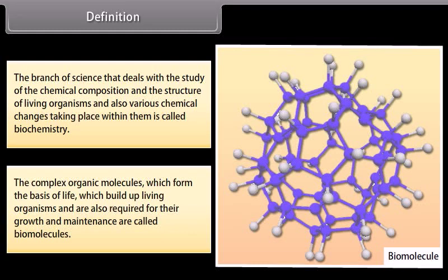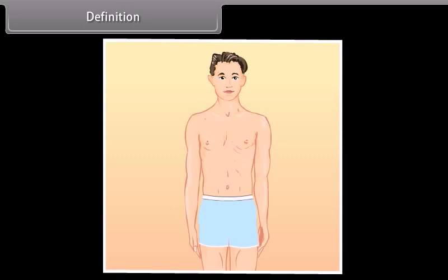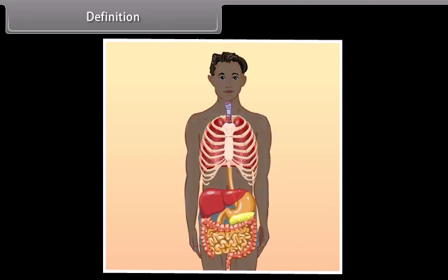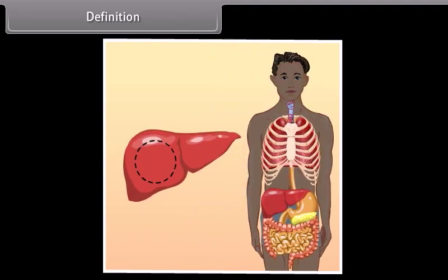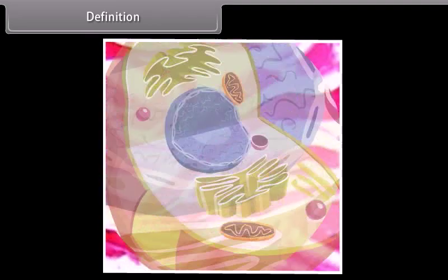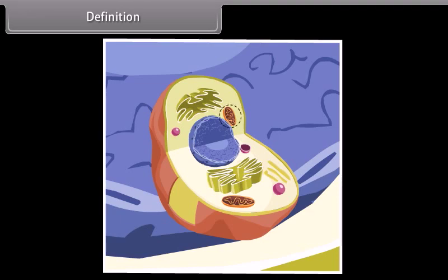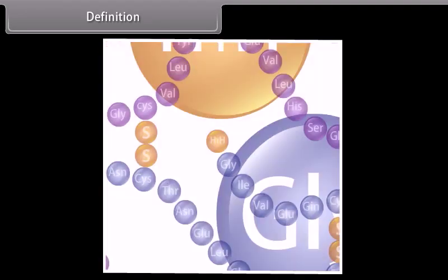The complex organic molecules which form the basis of life, which build up living organisms and are also required for their growth and maintenance, are called biomolecules. Biomolecules are related to living organisms in the sequence: living organisms → organs → tissues → cells → organelles → biomolecules.